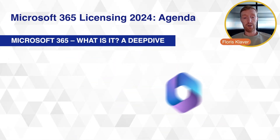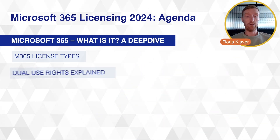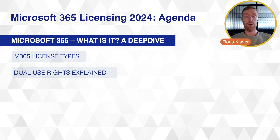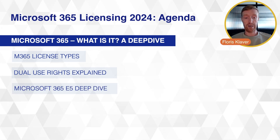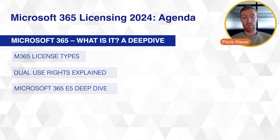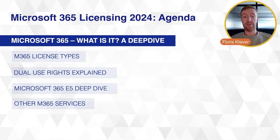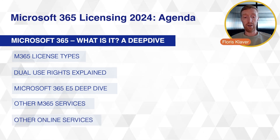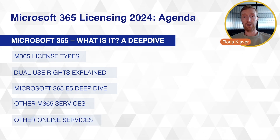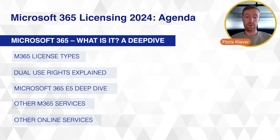We're going to talk about license types and dual use rights. I'm going to do a deep dive on what exactly an E5 is, and what other M365 services there are — other online services outside of the M365 suites.